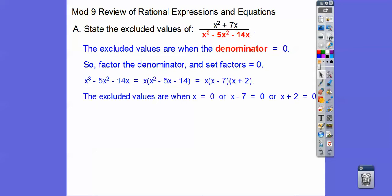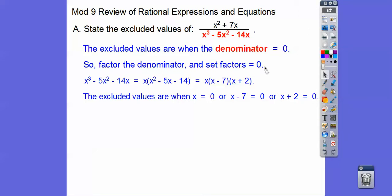So now we set all those factors equal to 0 right there. So now we're going to go plus 7, plus 7, minus 2, minus 2. So the excluded values are those numbers right there.